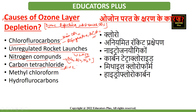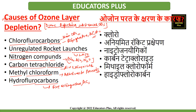Carbon tetrachloride is released from fire extinguishers and other solvents. Methyl chloroform is released mainly from adhesives and aerosols. Hydrofluorocarbons are also released by fire extinguishers, air conditioners, solvents and other sources. These are some of the sources of ozone layer depletion.